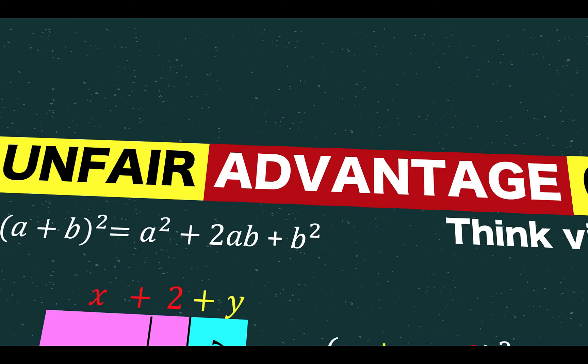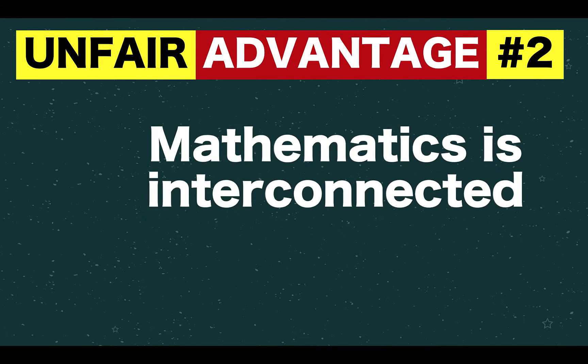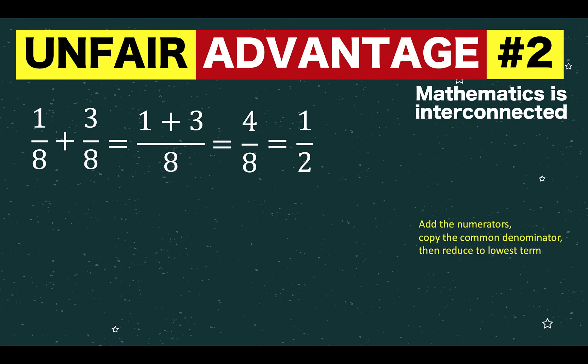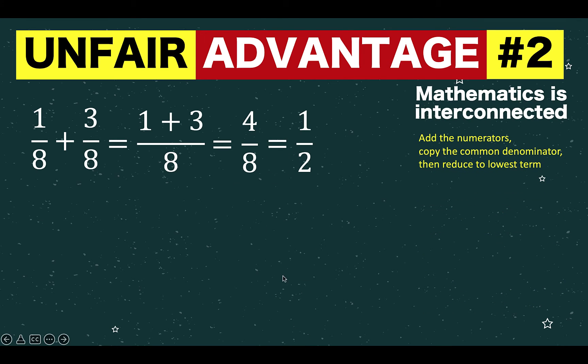Let's now proceed to our idea number two. Mathematics is interconnected. Let's say we have this simple addition of fraction problem: 1 over 8 plus 3 over 8. So we add the numerators and we copy the common denominator and reduce to lowest term. That is the rule for addition of fractions.